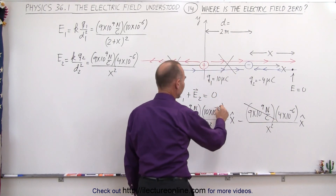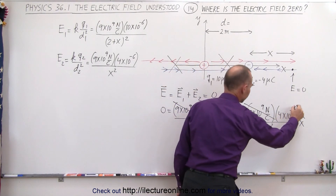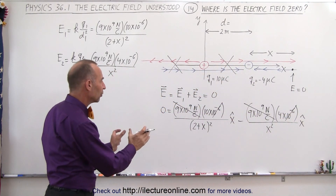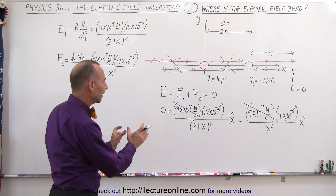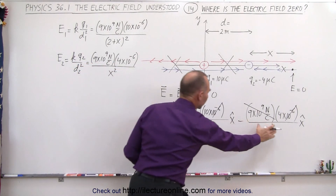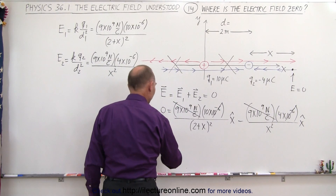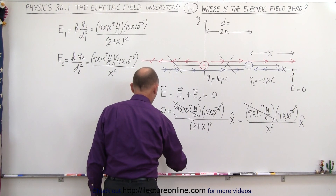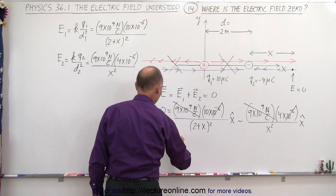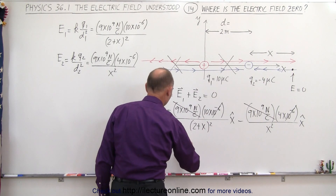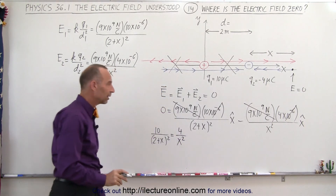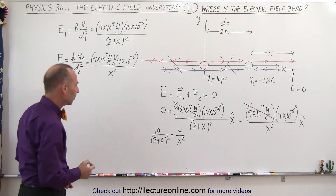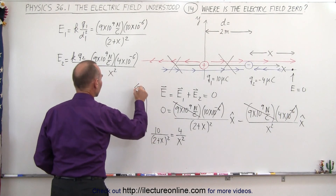We can also cancel out the 10⁻⁶ factor from both sides, and drop the x-direction unit vector. Moving the E2 term to the other side and setting them equal, we get: 10 divided by (2+x)² equals 4 divided by x².